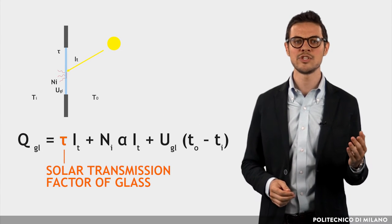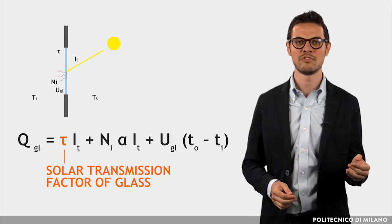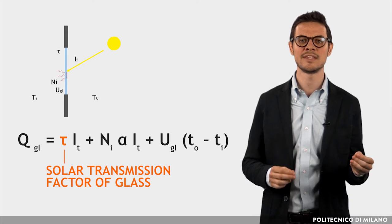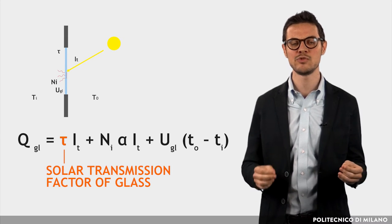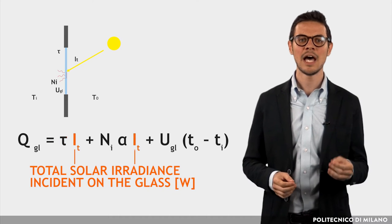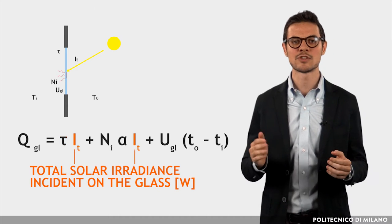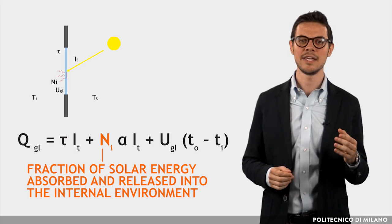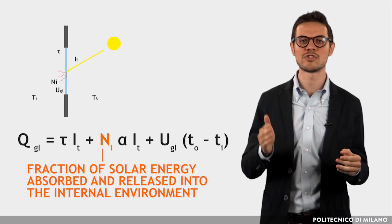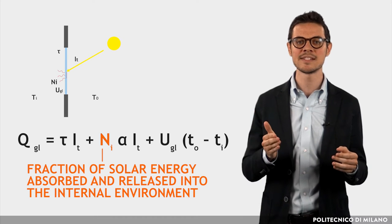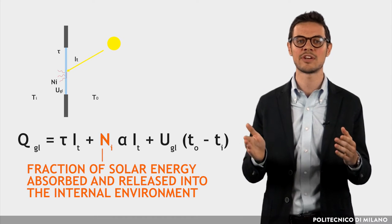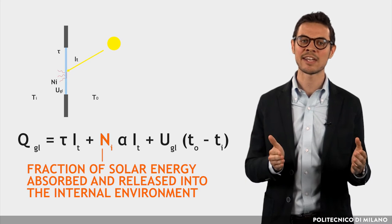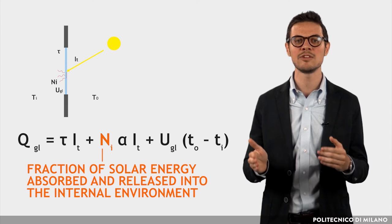Tau is the solar transmission factor of glass, function of the incident angle of solar beam and diffuse radiation. I_t is the total solar irradiance incident on the glass in Watts. And N_I represents the fraction of solar energy absorbed by the glass and released into internal environment by radiation in the far infrared and convection.